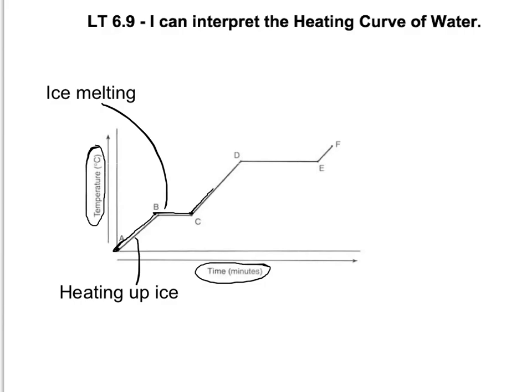Then the water starts to heat up again until I get to point D, where now I have water at 100 degrees Celsius. And we should know what happens to water at 100 degrees Celsius — it starts to boil or evaporate. So between point D and E, I have the exact same situation that I had between points B and C. That's a phase change, but this time it's evaporation — water evaporating.